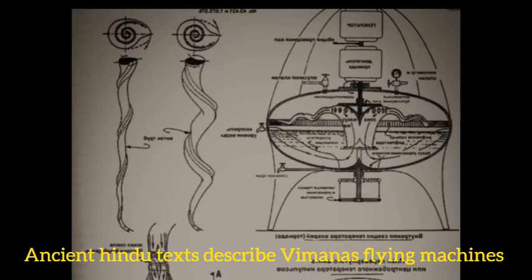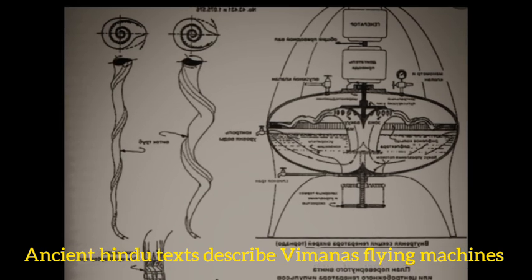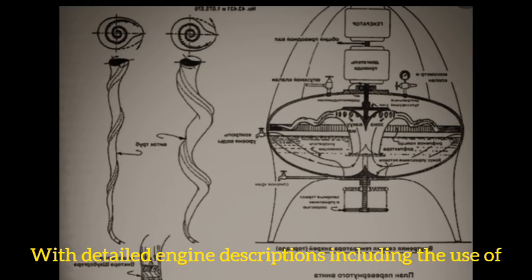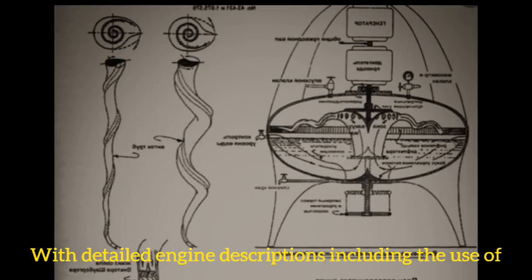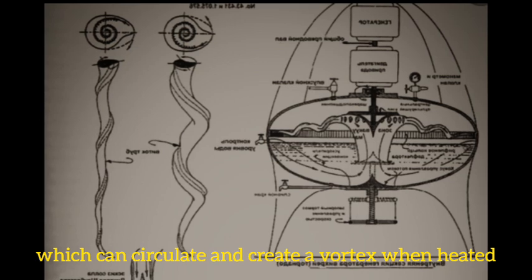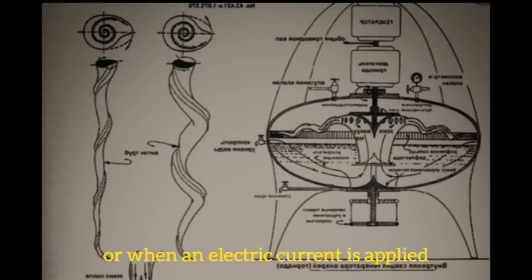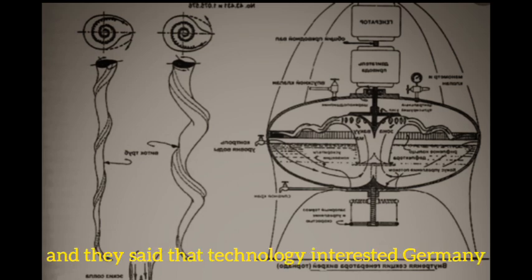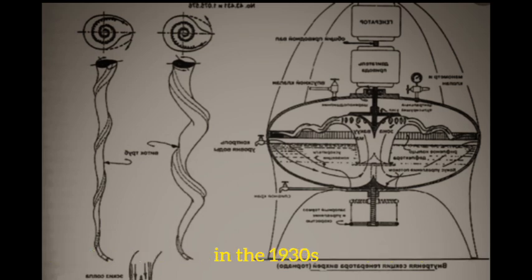Ancient Hindu texts describe Vimanas, flying machines with detailed engine descriptions, including the use of mercury, which can circulate and create a vortex when heated or when an electric current is applied. That technology interested Germany in the 1930s.